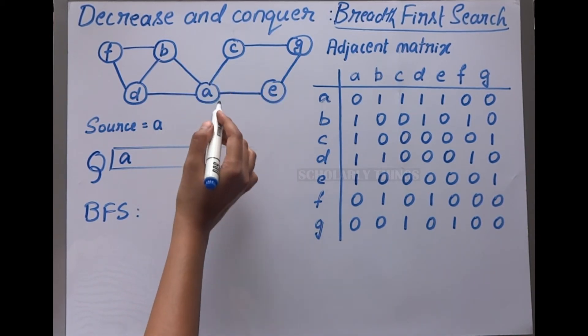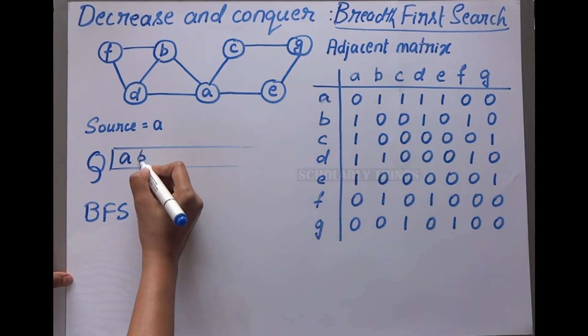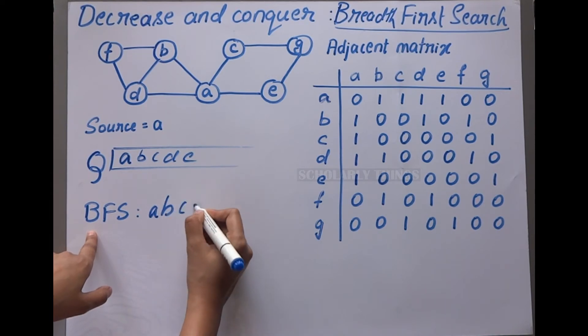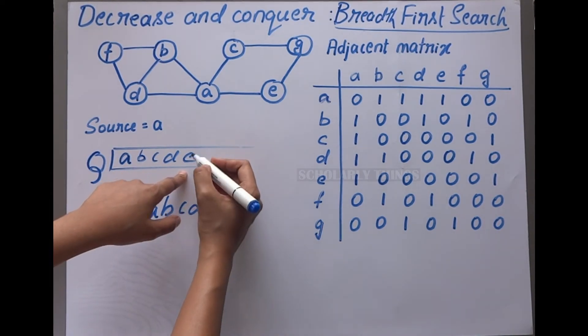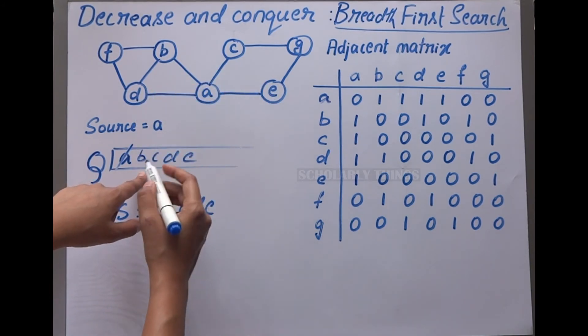From a, I visit b, c, d, e. Write them in the BFS list: a, b, c, d, e. Next, pop element a. All its adjacent nodes are visited. Next, pop b.